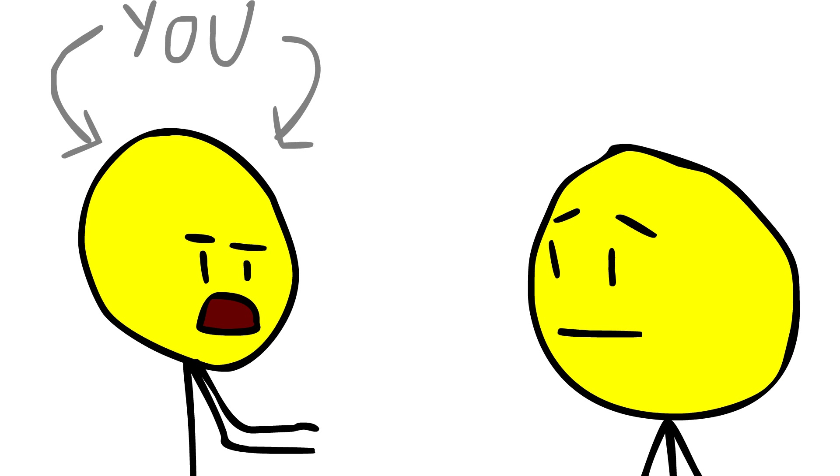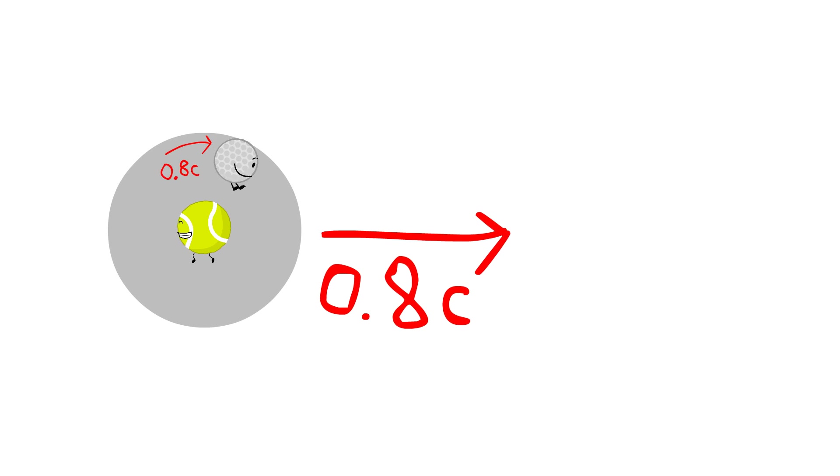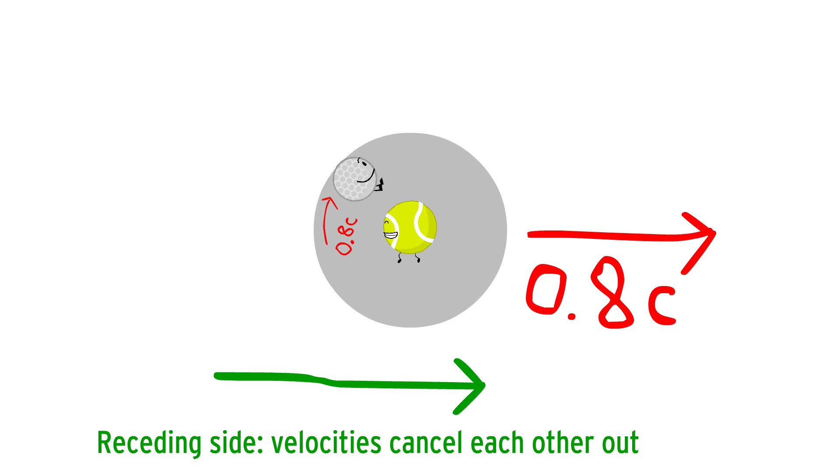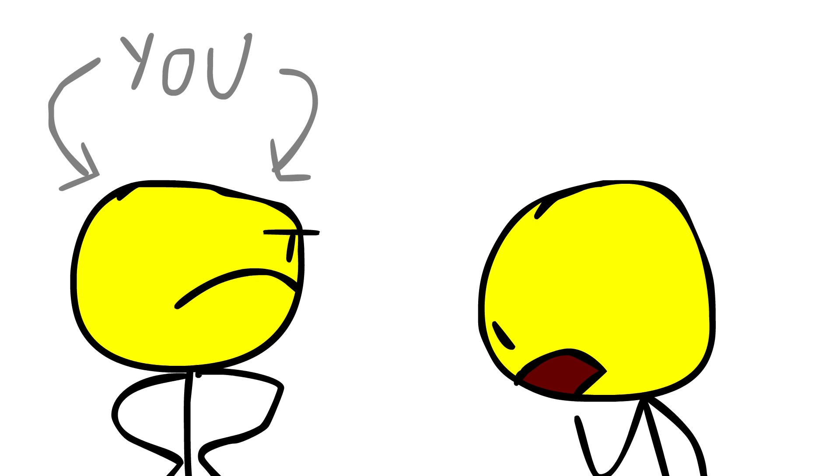First of all, to make communication easier, let's say the object in the middle is tennis ball and the orbiting object is golf ball. Sounds good. So when golf ball is on the leading side of the orbit, she'll be going 80 plus 80 equals 160% the speed of light. You said velocities don't add up simply like that. And you get something crazy like 97.6% the speed of light.